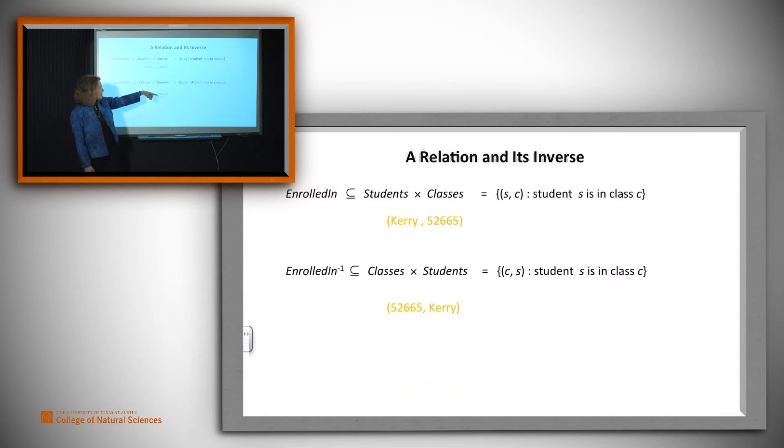And so we get elements in this inverse relation. For example, 52665 relates to Cary.